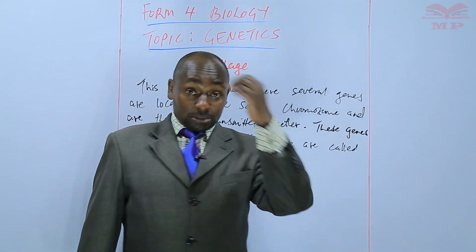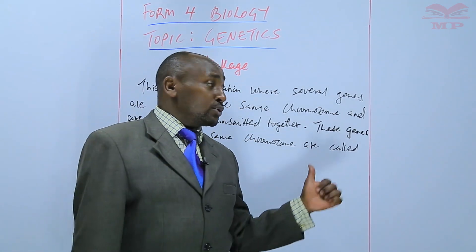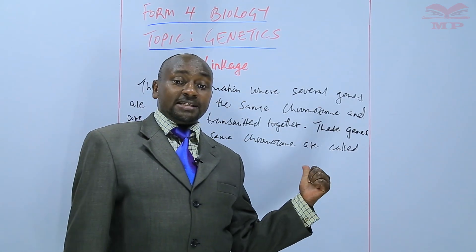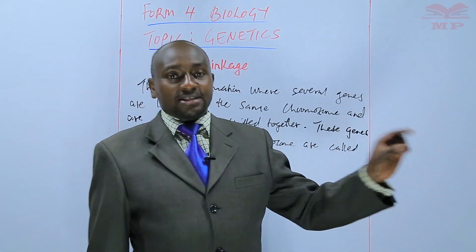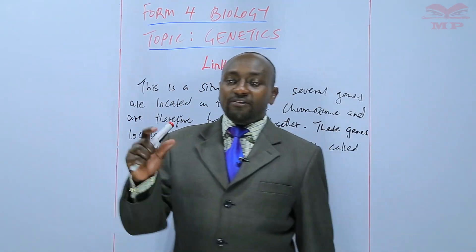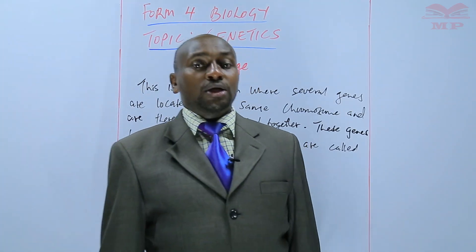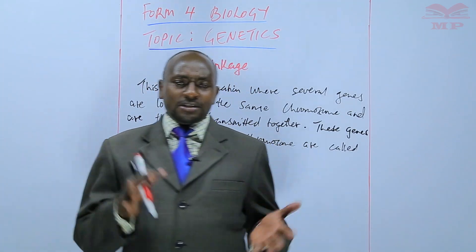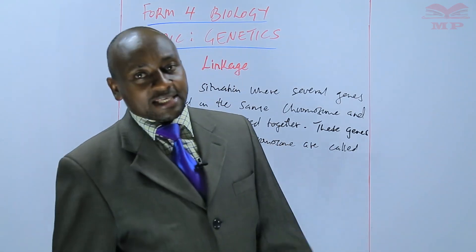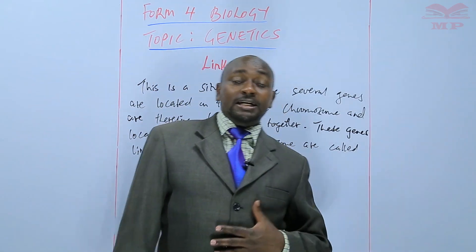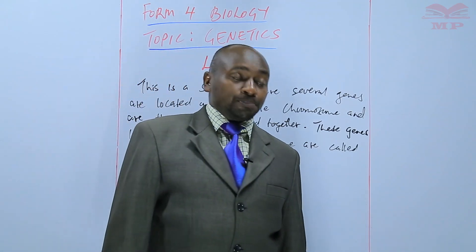In Drosophila melanogaster, when you are doing sex determination, the male is XY, just like the human. So it has a lot of similarities with humans — you can say the male is heterogametic and the female is homogametic.